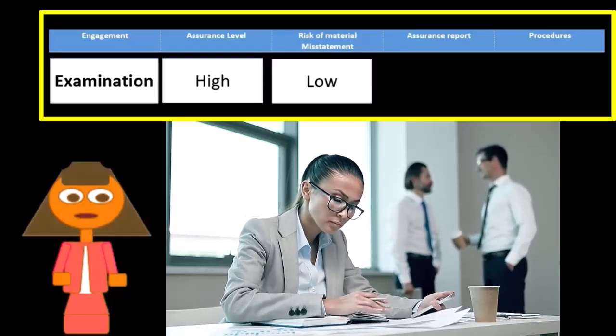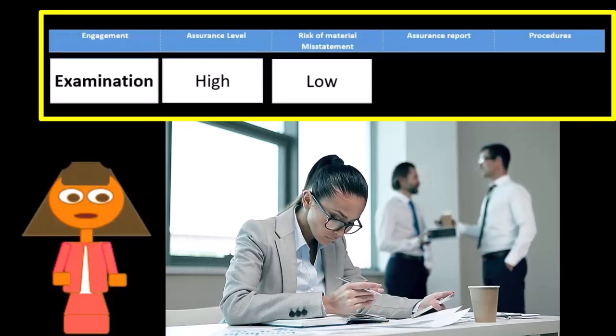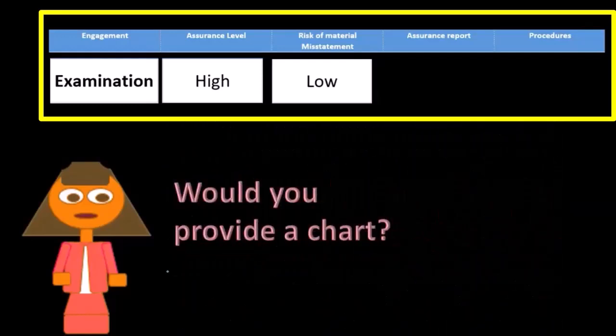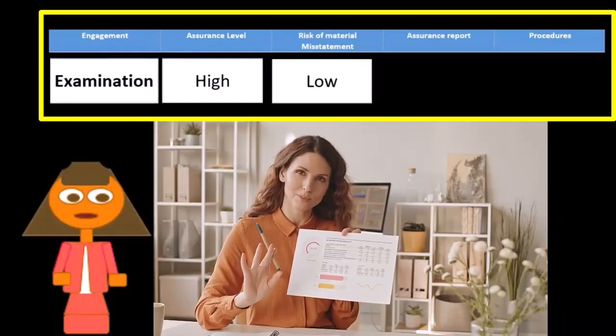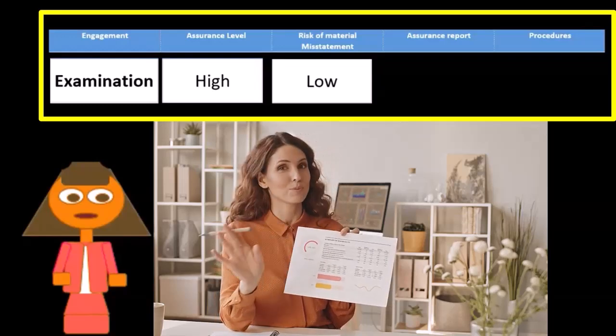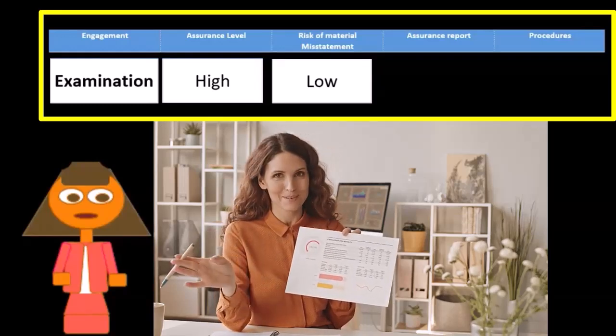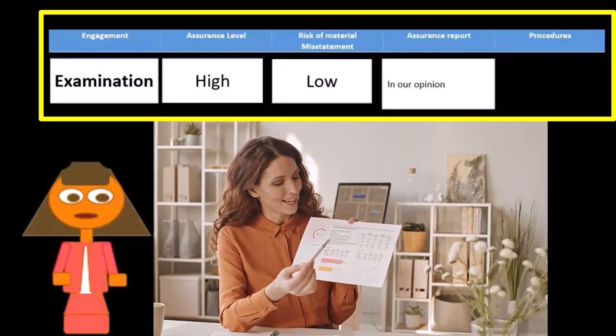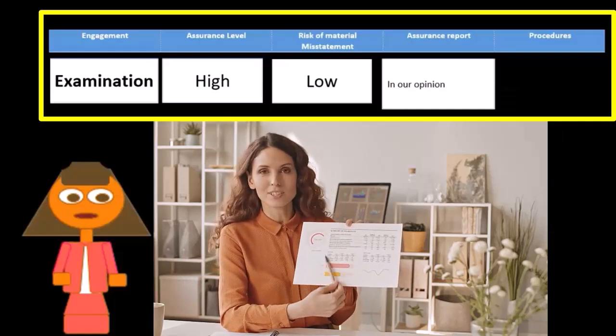If we look at the financial statements and say what are the odds that there's a big misstatement, well if it's been audited, the risk of a material misstatement, a misstatement that would be relevant to decision making, is low. It doesn't mean there are no immaterial misstatements, but if it's immaterial it shouldn't affect the decision making.